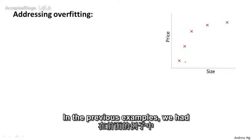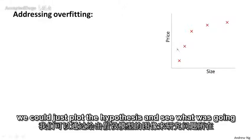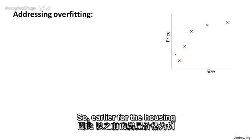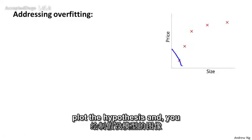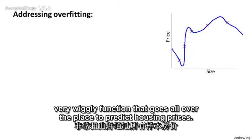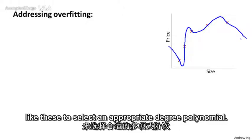In the previous examples, we had one or two-dimensional data so we could just plot the hypothesis and see what was going on and select the appropriate degree polynomial. So earlier, for the housing prices example, we could just plot the hypothesis and maybe see that it was fitting this sort of very wiggly function that goes all over the place for the housing prices.